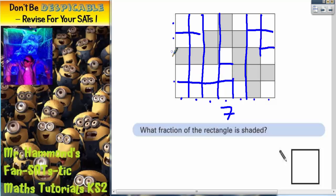And one, two, three, four, five down the side. So it's a seven by five rectangle. And if it's a seven by five rectangle, that means there must be 35 squares altogether. So it's going to be out of 35 because 35 identical squares would fit in that rectangle altogether.